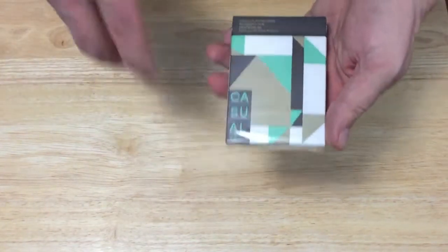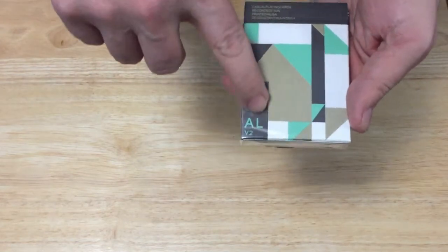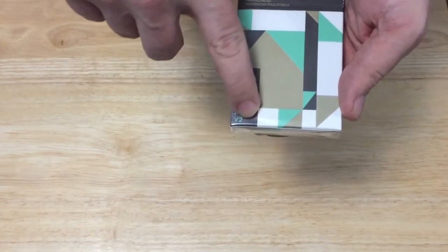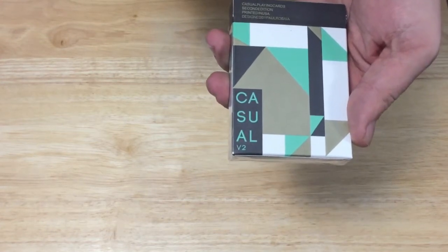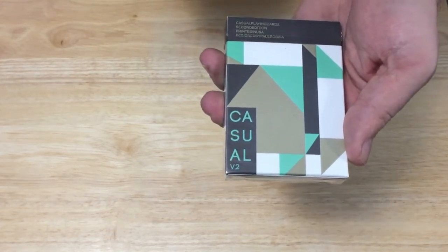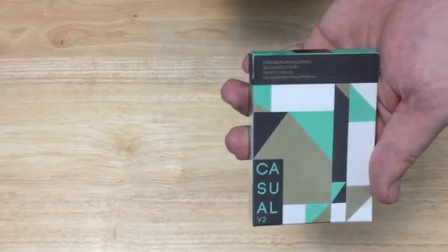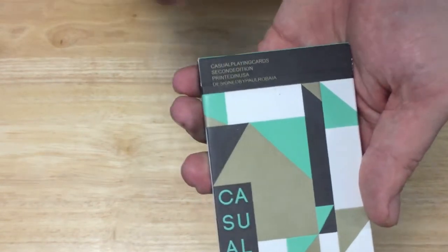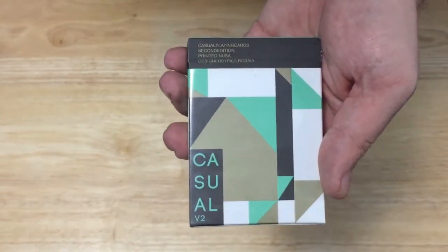This is the second edition. It was released through his website paperclubs.com. Front of the box says Casual V2. Down here, casual is embossed. It says casual playing cards second edition, printed in USA, designed by Paul Robaya. And for some reason as a design feature or whatever, he's decided not to put spaces between any words, because reasons.